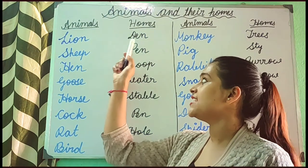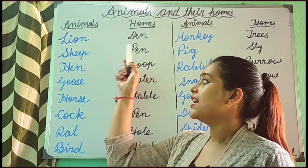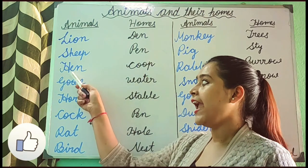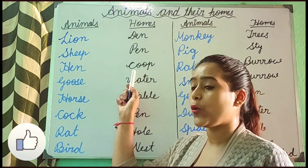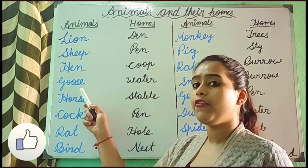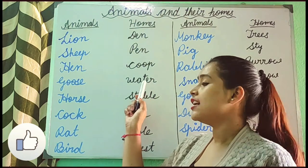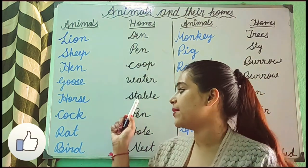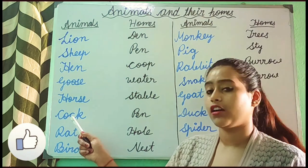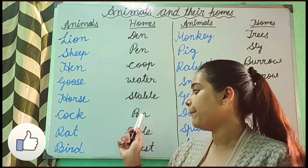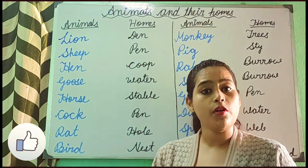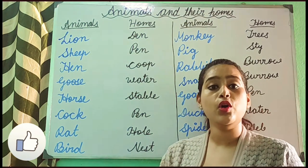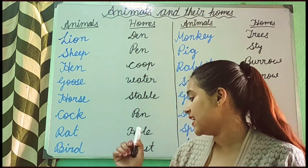The home of a lion is dame. The home of a sheep is pig. Hen. The home of a hen is coop. Goose. The home of a goose is water. Horse. The home of a horse is stubble. Cock. The home of a cock is pig. Rat. The home of a rat is pig. Bird. The home of a bird is nest.